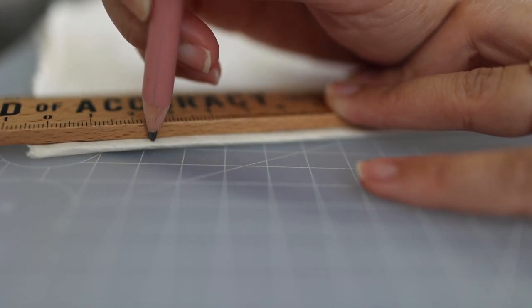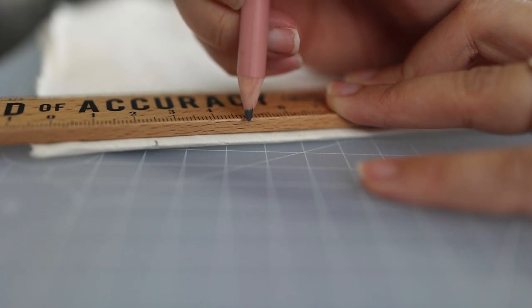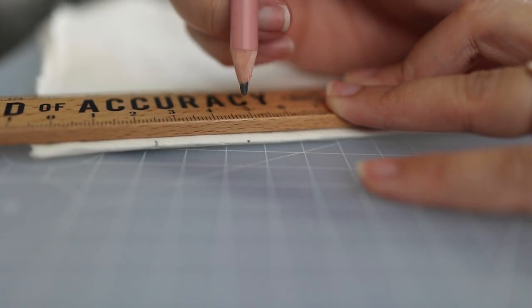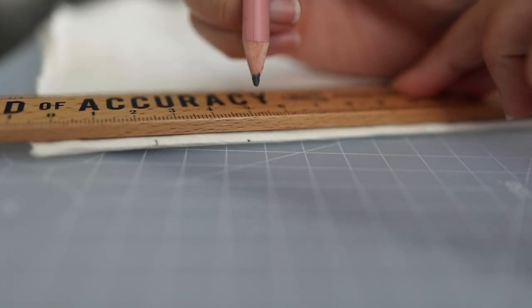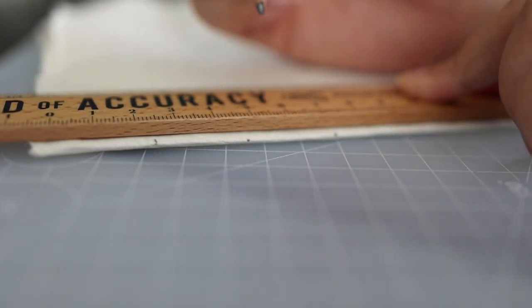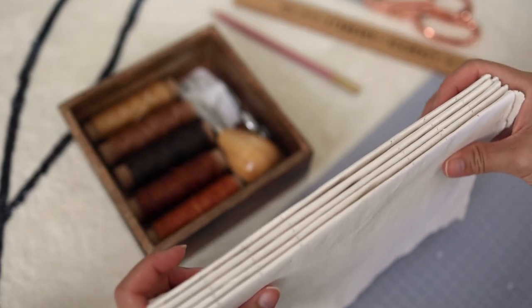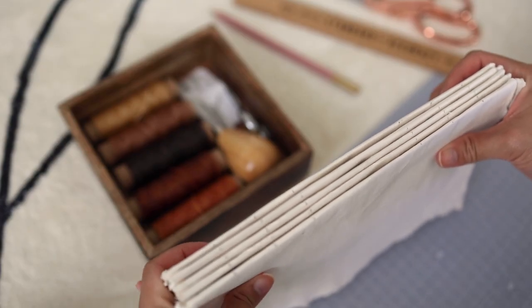Next, we will be adding points on the folded edge of the signatures. Three points, one inch apart from the top and from the bottom of the paper. So total, we will have six points. I recommend that you measure the distance in between to make sure that they are all the same on all your signatures.